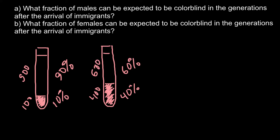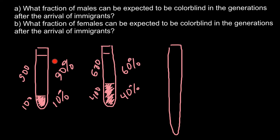Now we mix these two test tubes into a third, larger one. It must be big enough to contain 1,000 milliliters from the first test tube and 1,000 milliliters from the second, giving us 2,000 milliliters total. We get 400 milliliters of the substance from the second test tube.